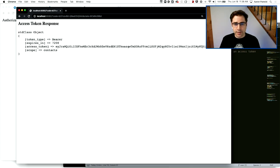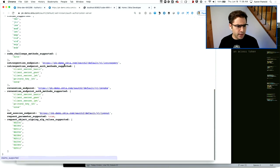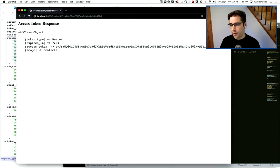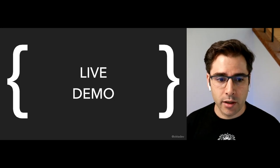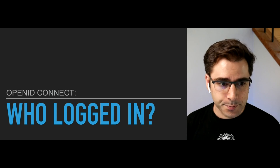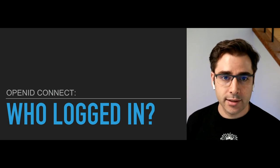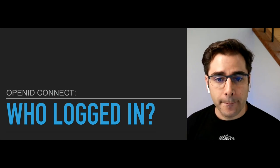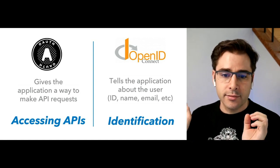We have to learn the user data some other way. There is actually an API in Okta to look up user information, but instead what we're going to do is use OpenID Connect to actually learn about the user. So let's talk a little bit about OpenID Connect before we get back to the code. The access token just tells us someone logged in and we can now make API requests. OpenID Connect is about identifying users — OAuth is for accessing APIs, OpenID Connect tells you who the user is.